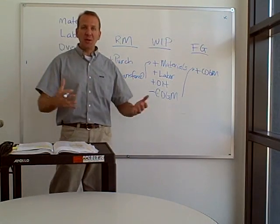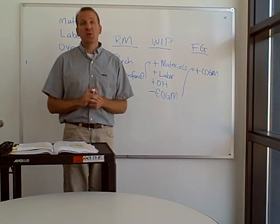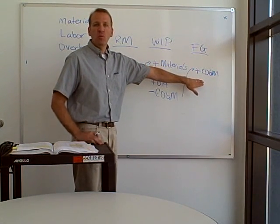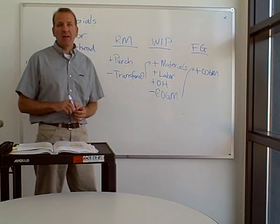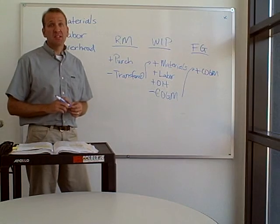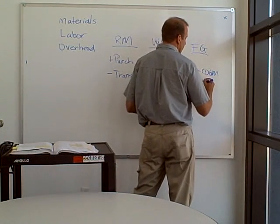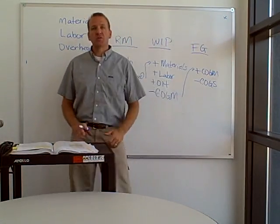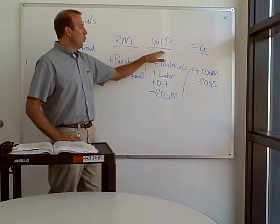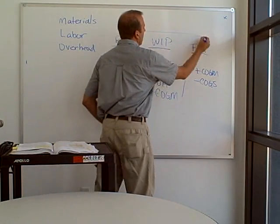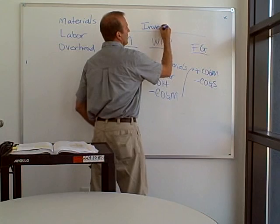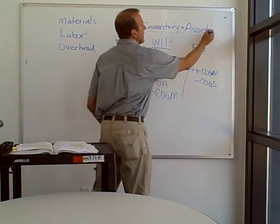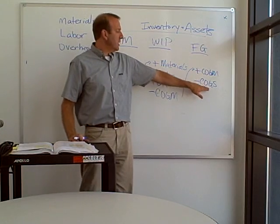Now we have all these chairs accumulating in our finished goods area — what do we do with those? We're going to sell them. When we sell an inventory item, that's cost of goods sold. So we subtract out cost of goods sold from finished goods, and it goes into the cost of goods sold account, which is an expense. Raw materials, work in process, and finished goods are all inventory accounts, meaning they are all assets.